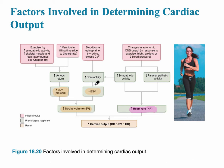The end-diastolic volume is the preload. Think of preload as the amount of stretching of the muscle beforehand. That would be equal to the venous return — the blood returning from the veins, going into the right atrium and into the ventricle, or from the left atrium into the left ventricle.